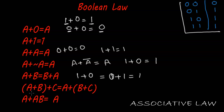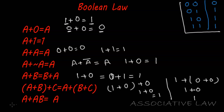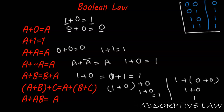Moving forward to the Associative Law: if we bracket these differently, the output is still going to be the same. For example, one plus zero plus zero — one plus zero is one, and one plus zero is again one. Even if we bracket it the other way as one plus (zero plus zero) — zero plus zero is zero, and one plus zero is again one. Hence the output is the same.